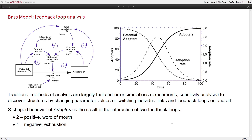The traditional methods we use are largely trial-and-error simulations, sensitivity analysis, and scenario analysis, where you're basically trying to discover structures by changing parameter values and different combinations, trying to switch loops on and off to see which is influential when. For this simple model, you can clearly understand that in the beginning there is an exponential positive reinforcing loop — the word-of-mouth loop — where the more people become adopters, the stronger is the dynamic of converting other potential adopters. In the middle, the dominance shifts and the negative balancing loop — the exhaustion loop — becomes much more prominent as you simply run out of people to convert.